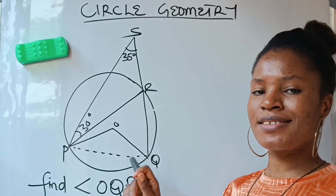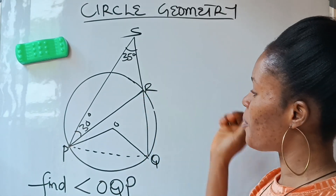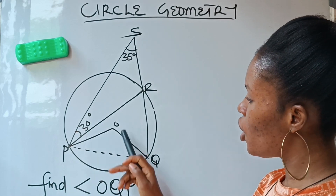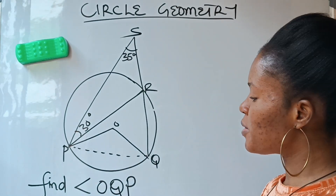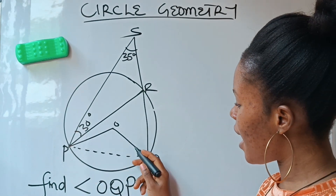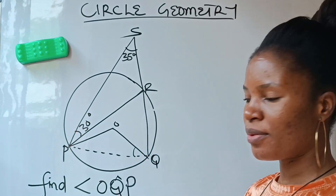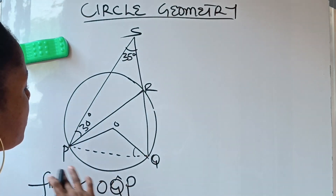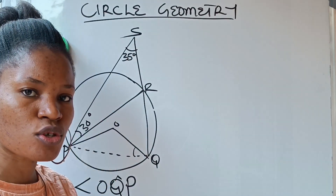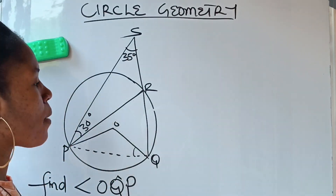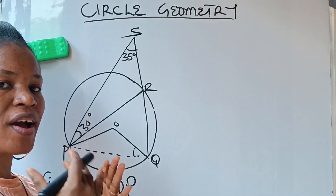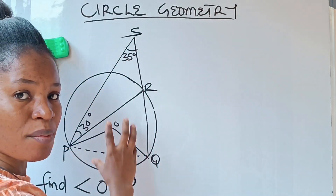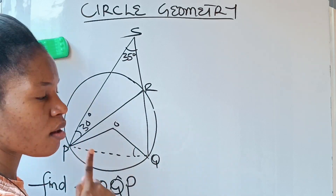Welcome to my channel. This is circle geometry. Let's dive into it and find angle OQP — that means we are looking for the angle in the middle. When you are faced with something like this, we need to first find out which circle theorem is being examined here.